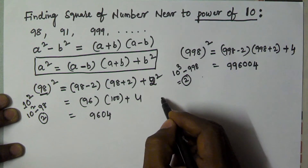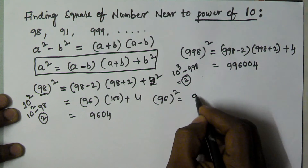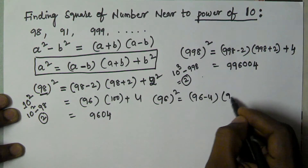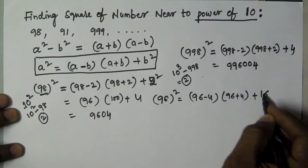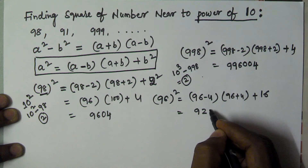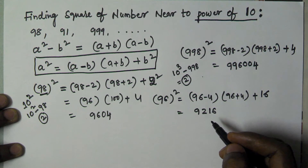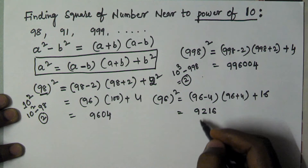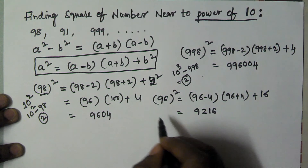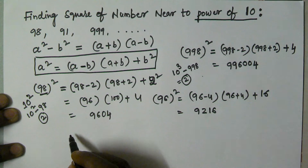Now let's find 96 squared. Here b = 4 (since 100 minus 96 = 4). So (a minus b) = 96 minus 4 = 92; (a plus b) = 96 plus 4 = 100; and b² = 4² = 16. So 96² = 92 × 100 + 16 = 9216.